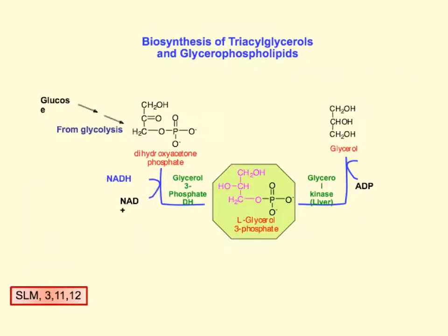This polar head group will orient itself with water, while the non-polar fatty acids will orient with each other, creating the cell membrane. The synthesis of triacylglycerols and glycerol phospholipids share the same first step. You can either start with dihydroxyacetone from glycolysis and convert it to glycerol 3-phosphate using glycerol phosphate dehydrogenase and NADH, or you can start with glycerol itself and phosphorylate it with ATP using glycerol kinase — and that happens in the liver. This gives us L-glycerol 3-phosphate.